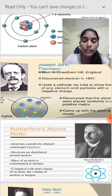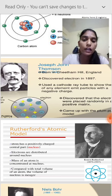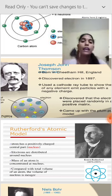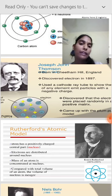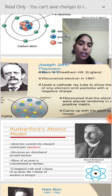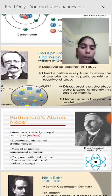In his Plum Pudding Model theory, he used a cathode ray tube to show that any element emits particles with a negative charge. He discovered that the electrons were placed randomly in a positive matrix.